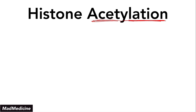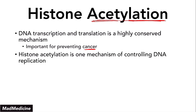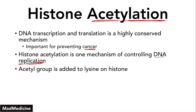So I would remember histone acetylation only, because deacetylation is the complete opposite. Histone acetylation is important because the DNA transcription-translation mechanism is very highly conserved. It is highly conserved because it is important for us to make sure our DNA doesn't get damaged — otherwise it will lead down to the cancer pathway, which our body does not want. DNA transcription and translation being highly conserved is an important mechanism for preventing cancer. In the histone acetylation pathway, an acetyl group is added to the lysine on the histone. The lysine gets the acetyl group — very important, very high yield.